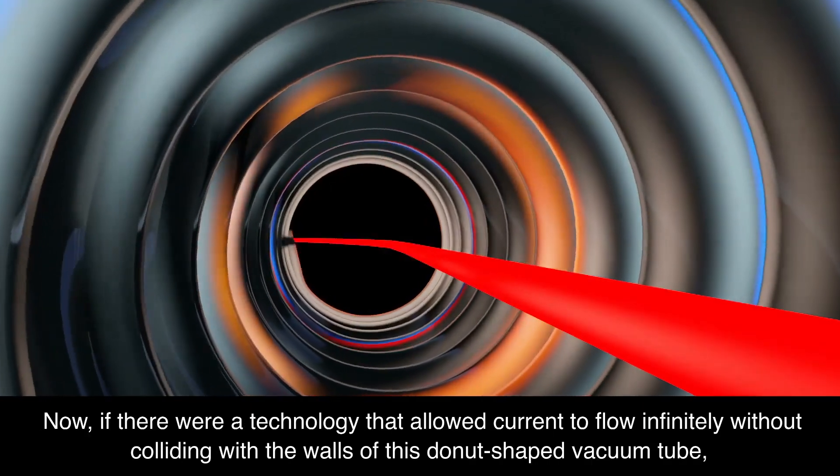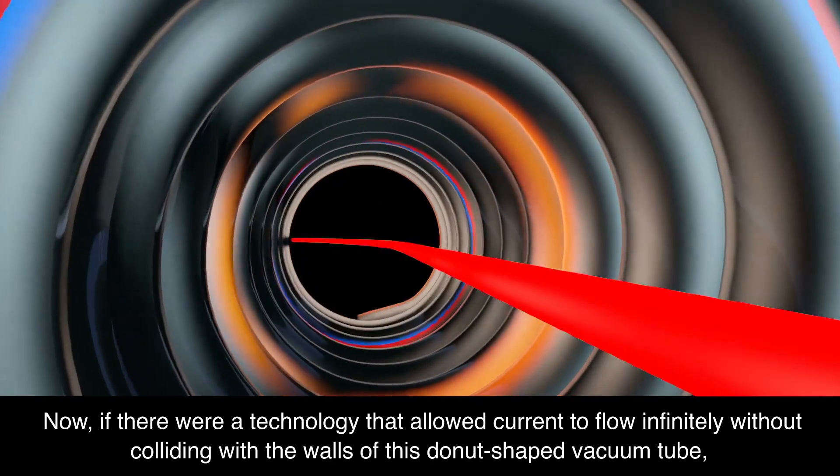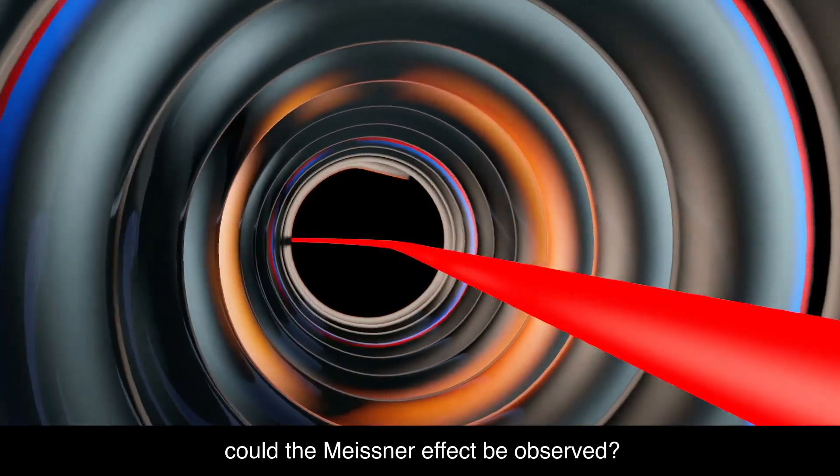Now, if there were a technology that allowed current to flow infinitely without colliding with the walls of this donut-shaped vacuum tube, could the Meissner effect be observed?